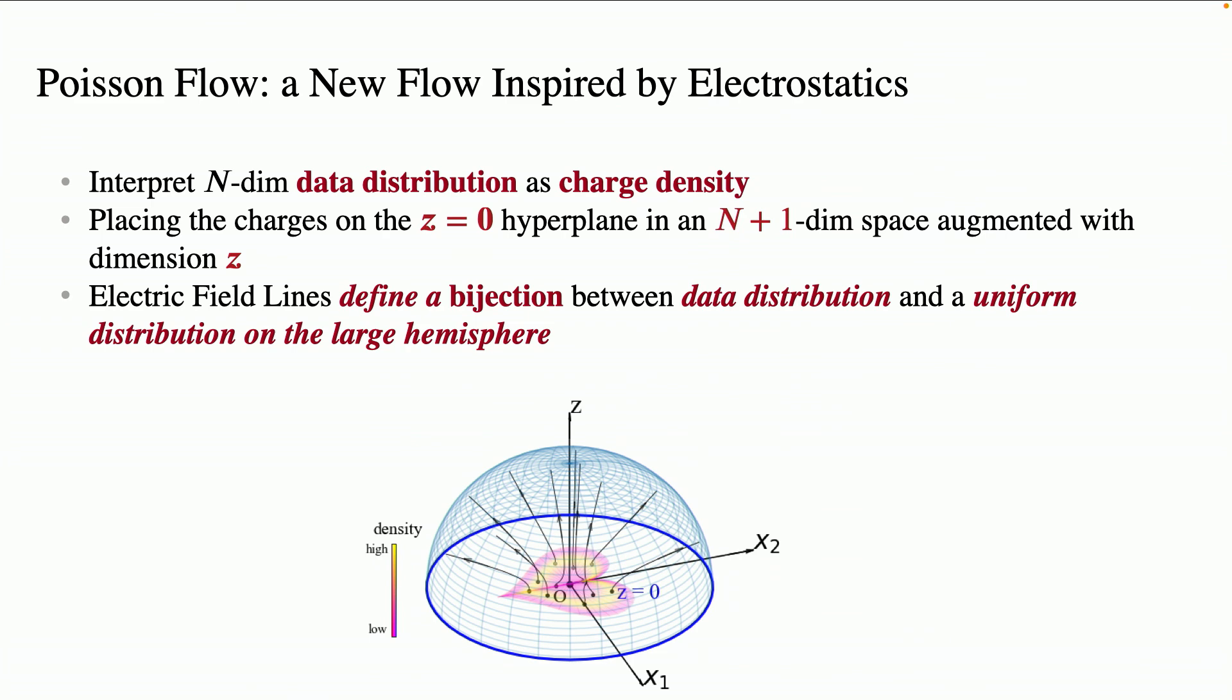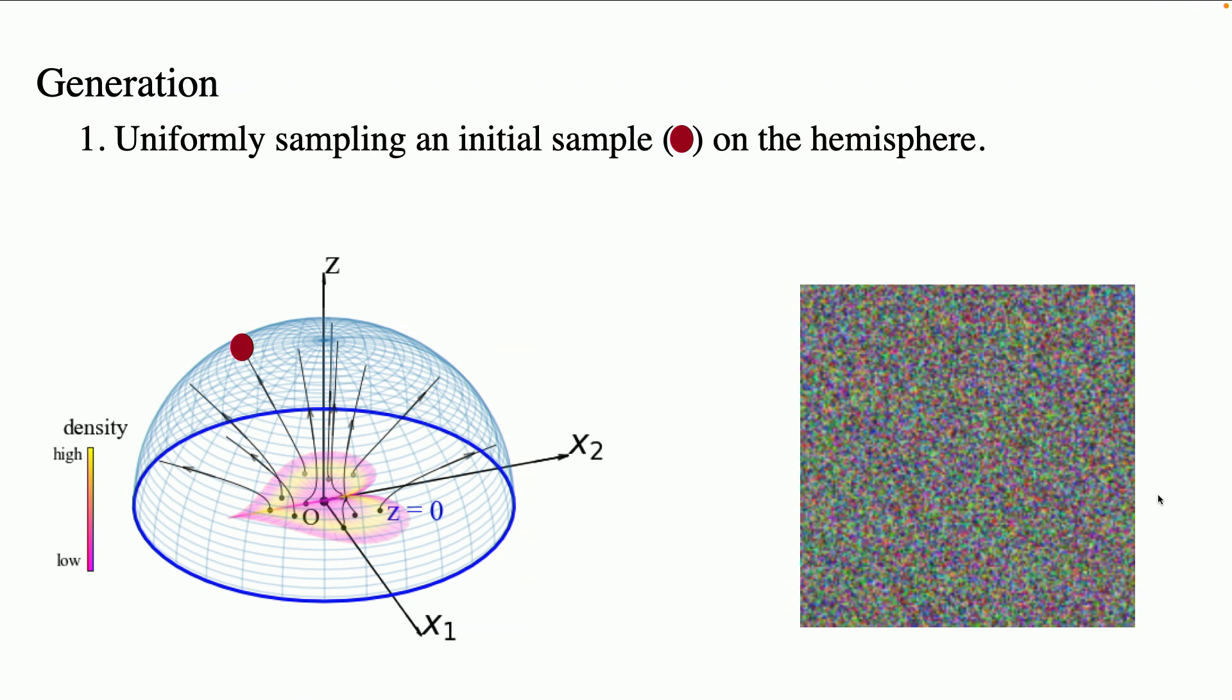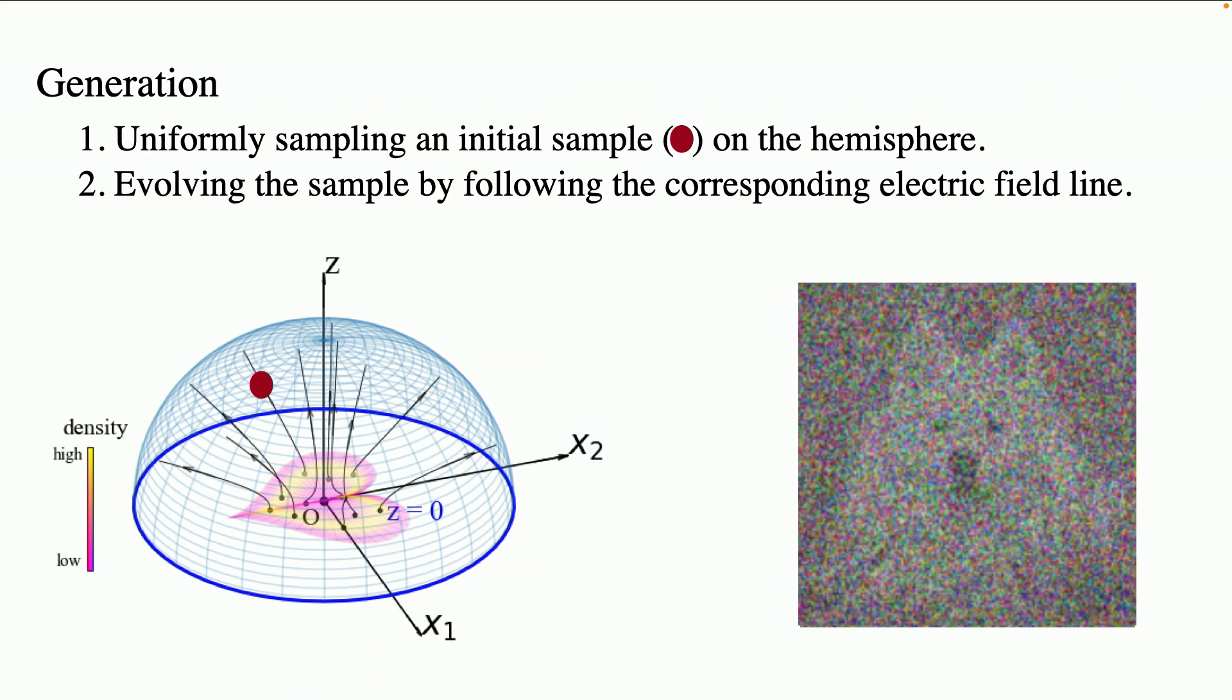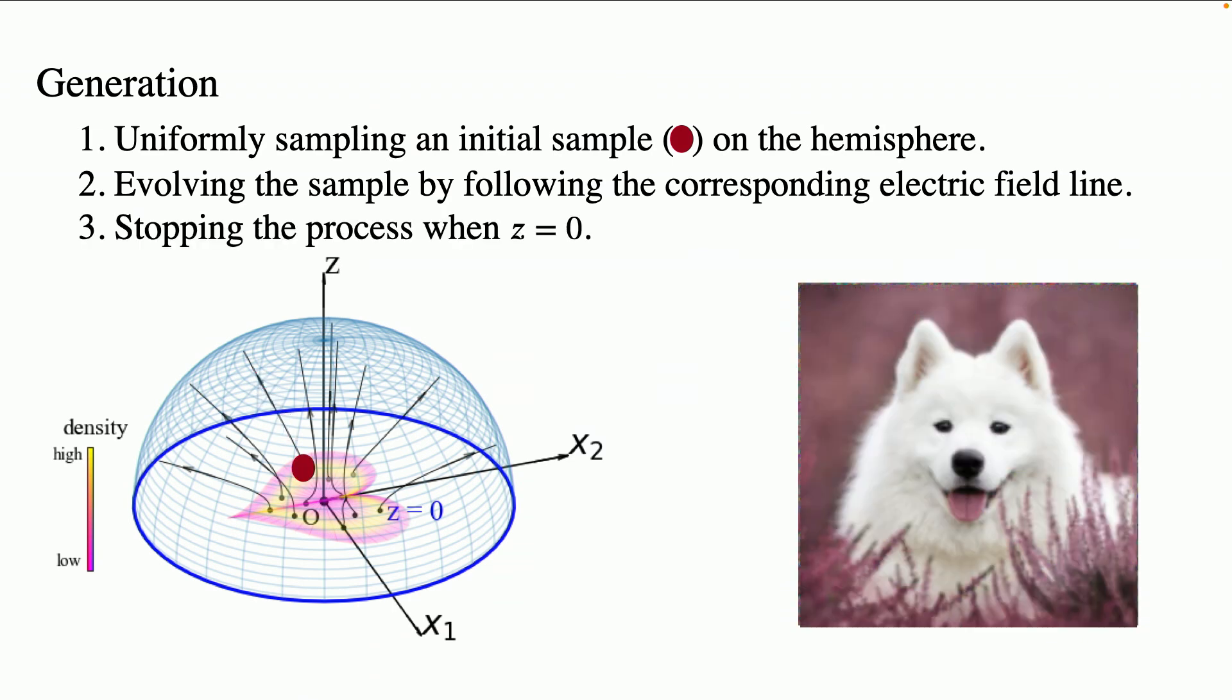Let's assume that our data distribution is this heart-shaped distribution on 2D, and the sampling process is carried out in 3D. So we first uniformly sample a sample on this uniform distribution on the hemisphere, and then we simply follow the electric field lines and do this iteration until the data sample hits this 2D plane. So once you hit this plane, you got this cute looking dog image.